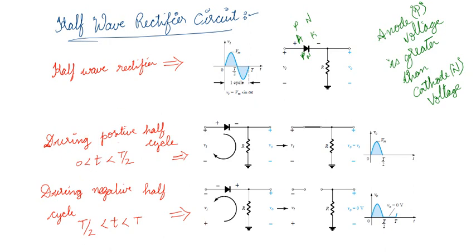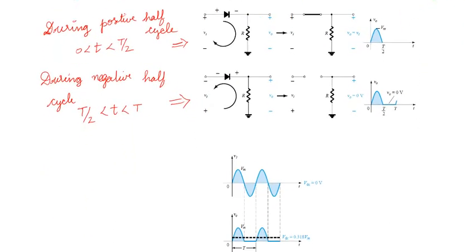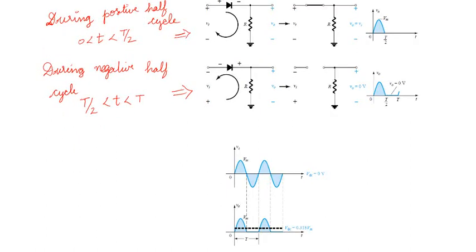During the positive half cycle, time between 0 and T/2, my diode is forward biased — I can replace the diode with a closed switch. So whatever the input voltage is will come to the output voltage; we will get the same positive half waveform at the output for the time 0 to T/2. During negative half cycle, between T/2 and T, the anode is getting a negative voltage, so the diode is reverse biased — it is an open circuit. The input signal will not go to the output because it is open, so the output is 0.